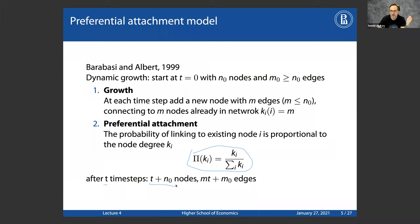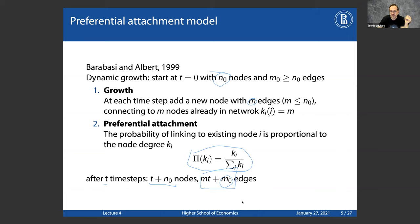The model operates as follows: at every time step we add a node, so after t time steps there will be t + n₀ nodes. There were m₀ edges at the beginning, and every new node brings m edges, so after t time steps the total edges are m₀ + mt. As time goes by, we get more nodes and more edges. Let me show you on a picture what it looks like.